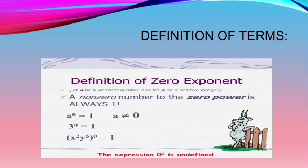Since we're done with our first law of exponents, which is our basis for zero and negative exponents, let us now proceed with the definition of zero exponent. A non-zero number to the power of 0 is always 1. Any number — whether negative or positive — as long as its exponent is 0, it will always result in 1. Just note that the expression 0 to the power of 0 is undefined.